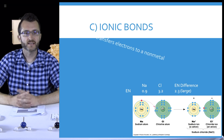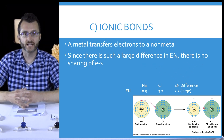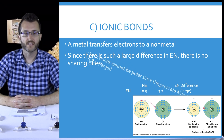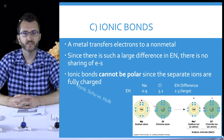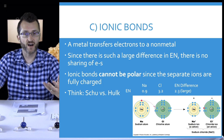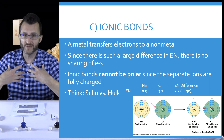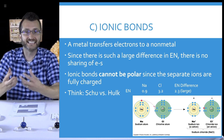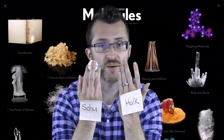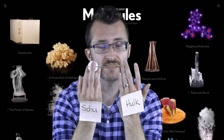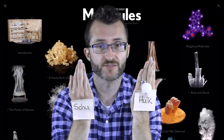And lastly we have ionic bonds. A metal transfers electrons to a non-metal. Since there is such a large difference in electronegativity, there is no sharing of electrons. Ionic bonds cannot be polar since the separate ions are fully charged. Think of me versus the Hulk in an epic tug-of-war. The Hulk is so strong and I'm so weak that he's just going to rip the rope right out of my hands. The Hulk is just going to rip that electron away from me, and the electron is transferred, not shared.